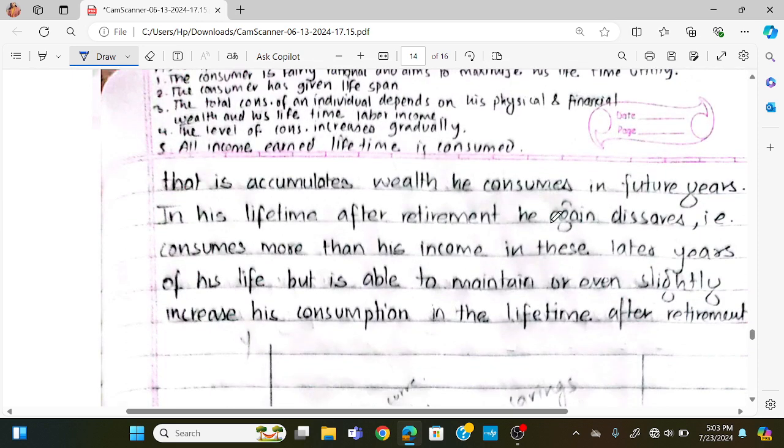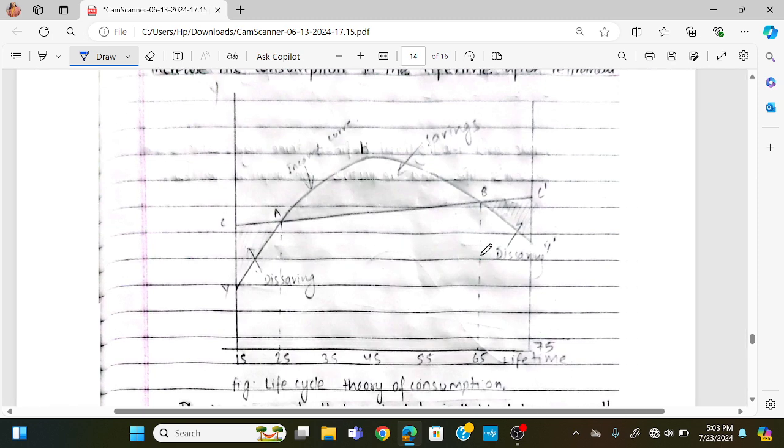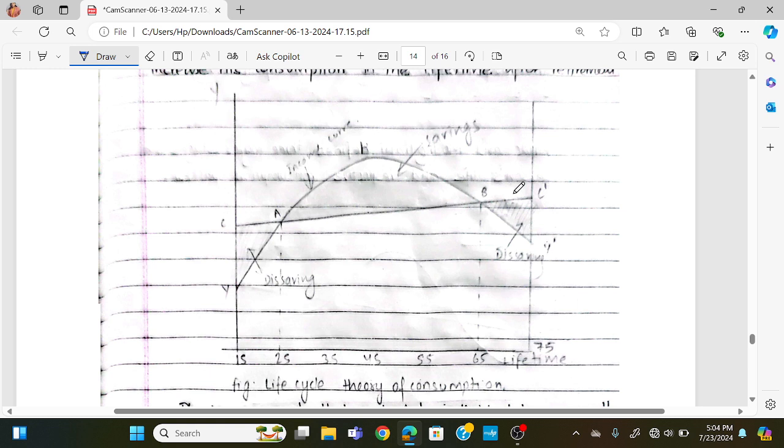After retirement, the individual again dissaves. In early life, saving is negative as consumption exceeds income. During middle years, individuals save. In later years, they use those savings to maintain consumption levels.